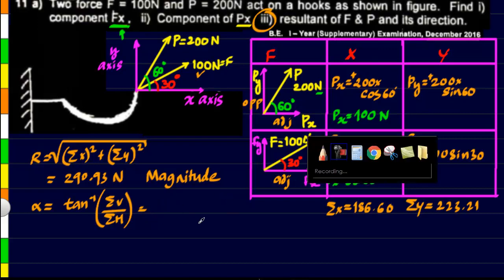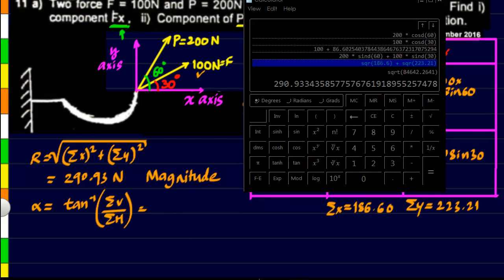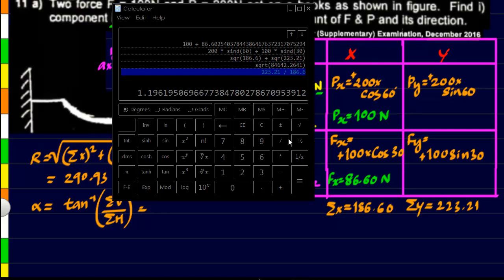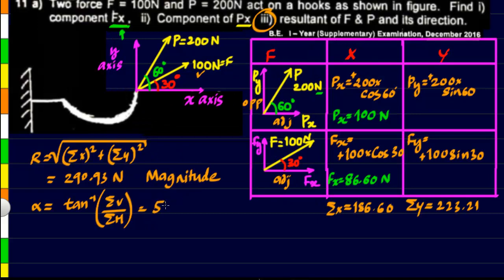So let us just feed it in the calculator. So we will have to take sigma y, that is 223.21, divided by 186.60. And the result of this we will have to take tan inverse of. So we are getting an angle of 50.10, so 50.10 degrees.